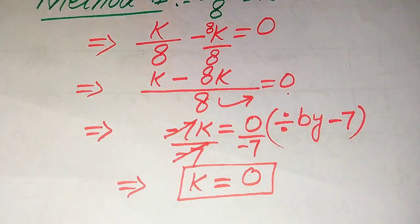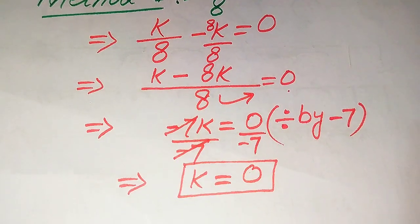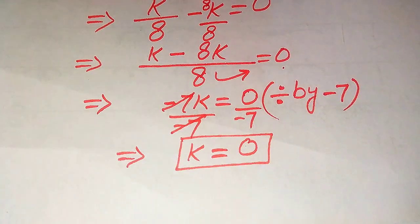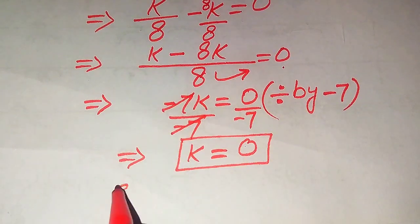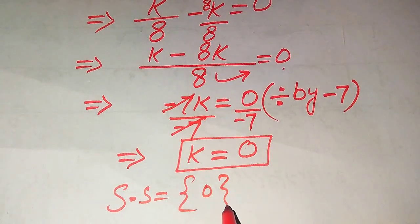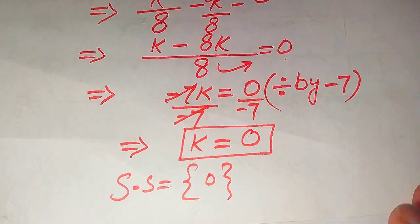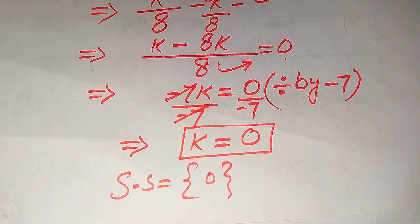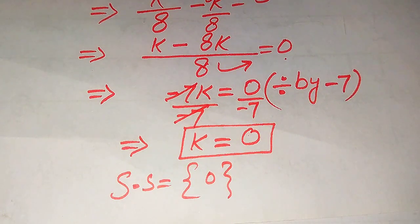In the second method we again get the value of k equal to 0. In the first method we already verified that this value satisfies our given equation, so the solution set of the second method is also {0}. This is our final answer. Thank you so much for watching this video. Please subscribe to my channel for more exciting videos.